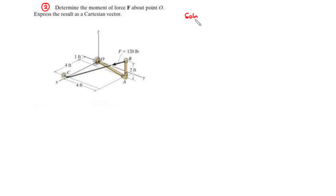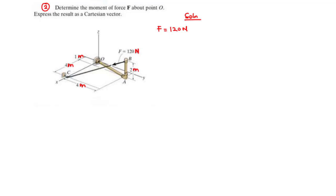For this question, we have the magnitude of the force giving us 120 pounds, and we change the unit from pounds to Newtons. We have distances along the XYZ axis also given in feet, and we change from feet to meters. We are given the magnitude of the force directed along BC to be 120 Newtons, and the unit vector is also directed along BC.